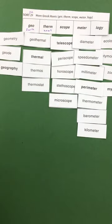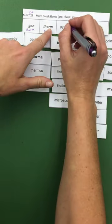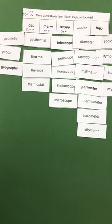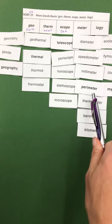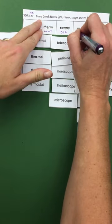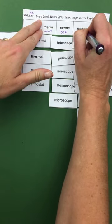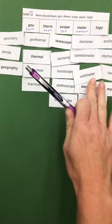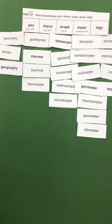And the scope. What does scope mean? It means to target or to see. Meter. Do you see a lot of things that can be measured here? It means measure. And how about logy? You probably come across the word logy a lot. It means to study.